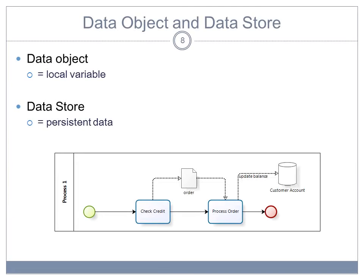A data object, because it disappears when the process is finished, is the equivalent of a local variable. And the data store, because it persists beyond the process existence, is the equivalent of persistent data. And at the bottom of the slide, you see a little example of how you can represent that in BPMN.